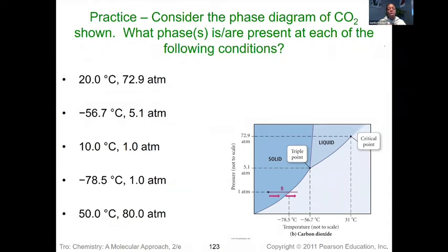If we're dealing with 20 degrees and 72.9 atmospheres, well 20 degrees would fall somewhere between here and here, and 72.9 would get us somewhere here, so we would be dealing with a liquid in that case.